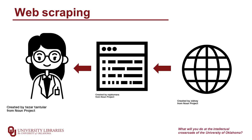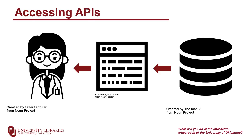In video 26, we're going to cover resources for web scraping, where you use programming scripts to pull content directly from the website instead of downloading it or copying and pasting it. Then in video 27, we're going to cover something called application programming interfaces, or APIs, to pull data directly from the source. So instead of downloading items one by one, you're going to do it automatically with your code.